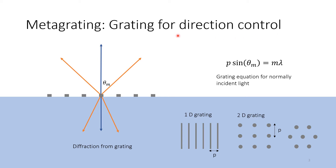As a second part we want to control the direction. For direction we use gratings. If we just look at any kind of grating — different particles spaced with a specific pitch — we can control the diffraction angle for a specific wavelength following the grating equation. A grating can have, for example, the shape of a 1D grating like a line, or a 2D grating like a grid or a hexagonal grid.